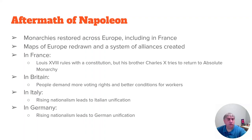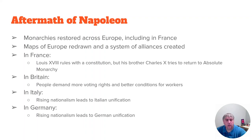In Great Britain after the Congress of Vienna, men demanded more voting rights and better working conditions. These protests led to the Peterloo Massacre in 1819, when soldiers fired into a crowd of protesters seeking better working conditions, killing many. As a result, the people demanded government reforms. The king also believed in reform, and the 1832 Reform Act doubled the number of men who could vote. By 1884, the right to vote had been extended to all male householders.